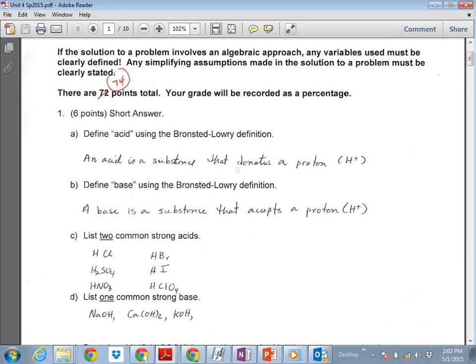Okay, a series of questions. These were each worth one point apiece. Bronsted-Lowry definition of an acid is a proton donor. Base is a proton acceptor. For C, I wanted you to give me two strong acids, and there's the six strong acids we talked about.